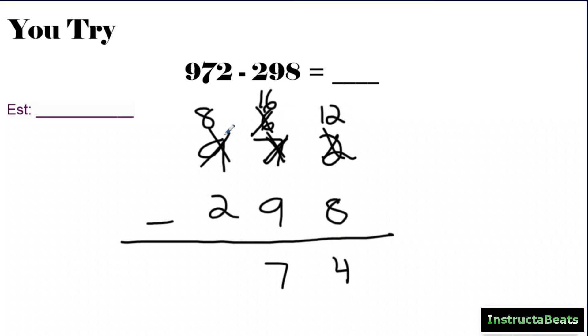8 minus 2, more on the top, no need to stop. So 800 minus 200 would give me 600, which is why my 6 is in the hundreds place. And we are going to add those together. And the difference between 972 and 298 is 674. And I forgot to give my estimate, but my estimate would have been about 700. So I know my answer is reasonable, which is always good to check.